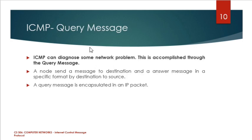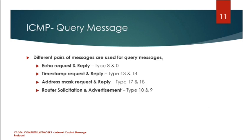The second type of ICMP message is the query message. ICMP can diagnose some network problems, and this is accomplished through query messages. Different pairs of messages are used for query messages — one request message and one reply message form a pair. The first message is echo request and reply message.